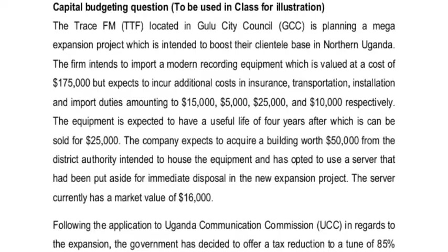The equipment will be sold for $25,000, which will be the disposal value. The company expects to acquire a building worth $50,000 from the district authority to house the equipment. If they don't get it for free, they will have to incur that cost, so it is both a cost and a potential incentive. The company has also opted to use a server set aside for immediate disposal, which has a current market value of $16,000 — that is the opportunity cost.